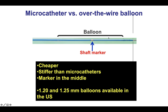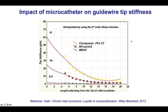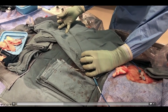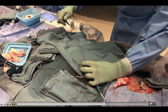The disadvantage of an over-the-wire balloon is that it is stiffer, and also the marker in those balloons — which are typically 1.0 or 1.2 to 1.5 mm balloons — is in the middle. Therefore, it is hard to know where the tip of the over-the-wire balloon is. Having a guide wire go through a microcatheter changes significantly the handling of the guide wire; there is an increase in the stiffness of the guide wire tip.